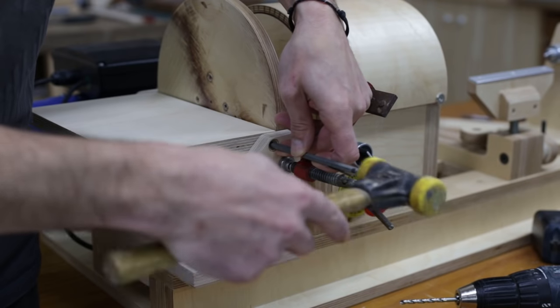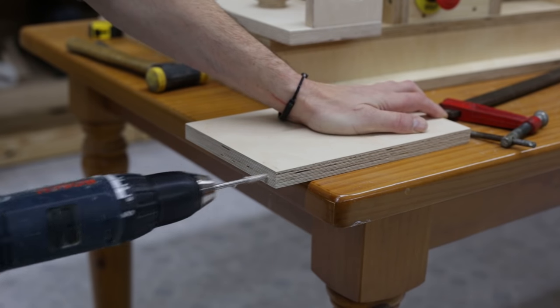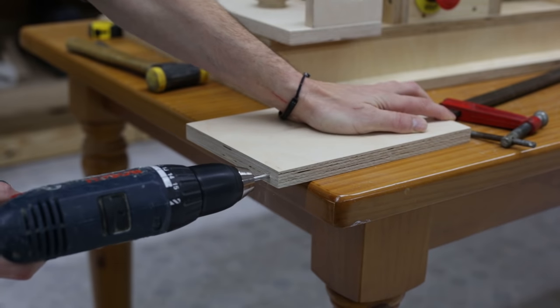I mark the holes for the screws that will serve as rotation axes. In this case, I will use a bit 0.5mm less wide than the screw.